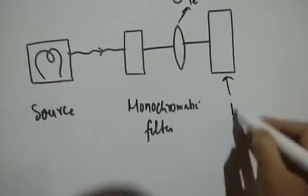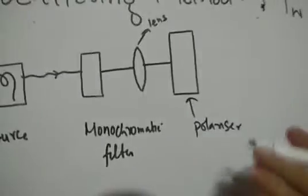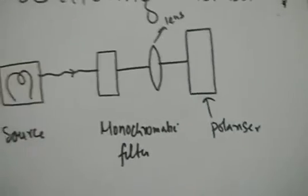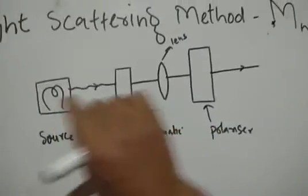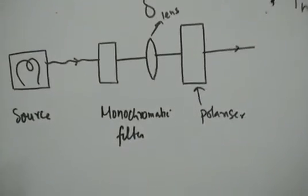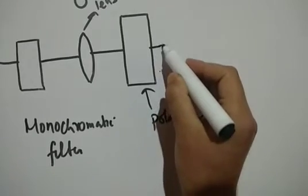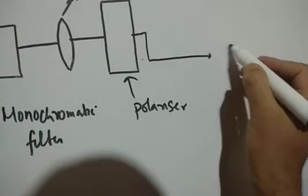The polarizer's function is to make the light oscillate in a single plane. Light is an oscillating magnetic and electric field perpendicular to each other and to the direction of propagation. So we get polarized light. Finally, that polarized light which comes through this sequence falls onto the experimental setup — we have a glass sample cell here.